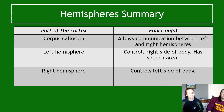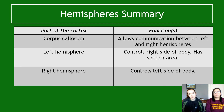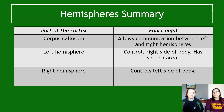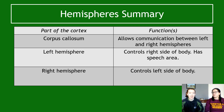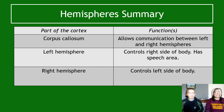To summarize: the corpus callosum allows communication between the left and right hemispheres of the cerebral cortex. The left hemisphere controls the right side of your body and also has a speech area. The right hemisphere controls the left side of the body. The next video is about split brain - what happens if you cut the corpus callosum - so make sure you understand this video first or the next one will be difficult.